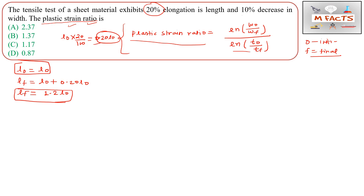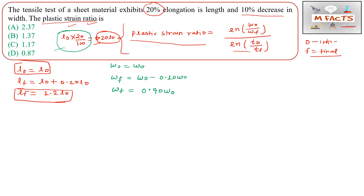The next value is the 10% decrease in width. Suppose w₀ is the initial width. Since there is a 10% decrease, wf equals w₀ minus 0.10·w₀, which gives wf equals 0.90·w₀. So the initial width is w₀ and the final width is 0.90·w₀.